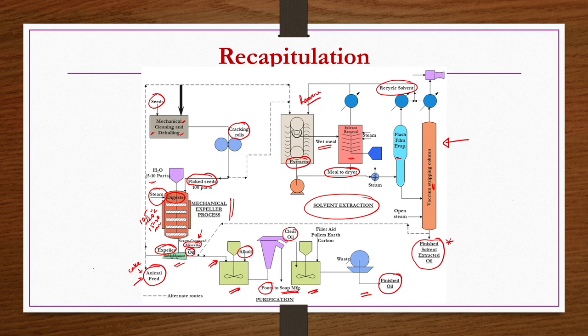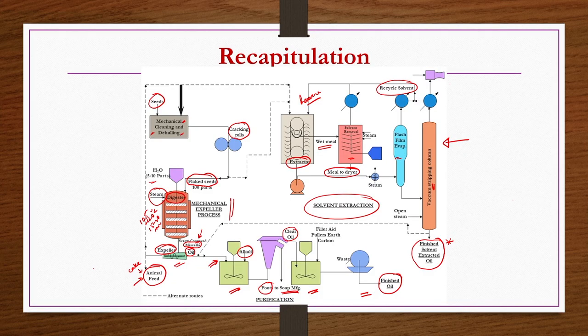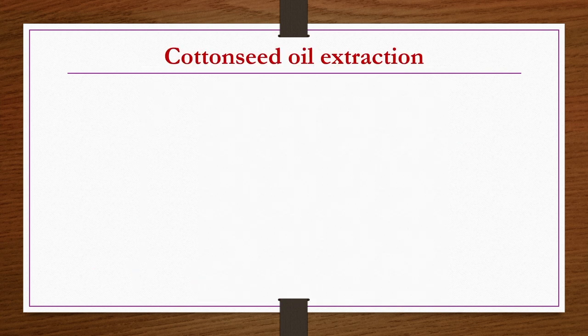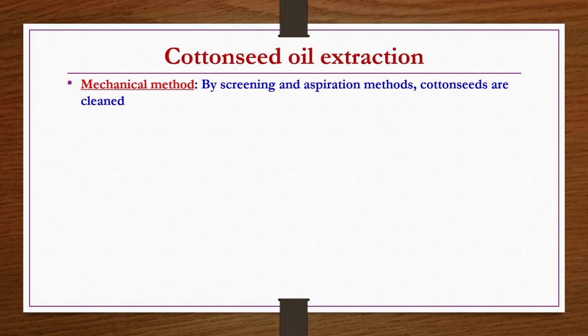In today's lecture we will see in detail about a few types of vegetable oil production. We will understand how the expeller works and the different types of expellers involved. Similarly, we will see the extraction column and purification of solvent for a particular type of vegetable oil. Let us start with cotton seed oil extraction — both the mechanical method and the solvent extraction method.